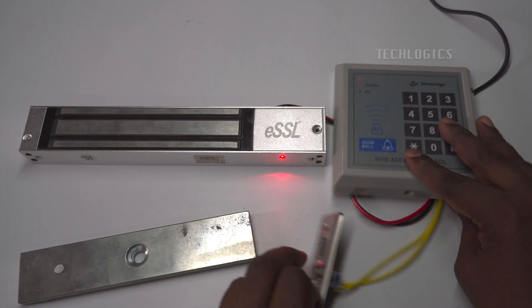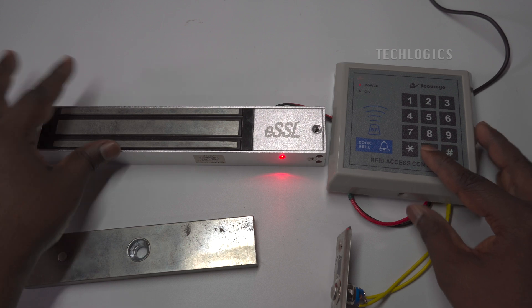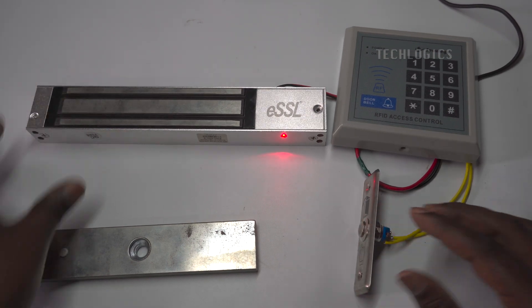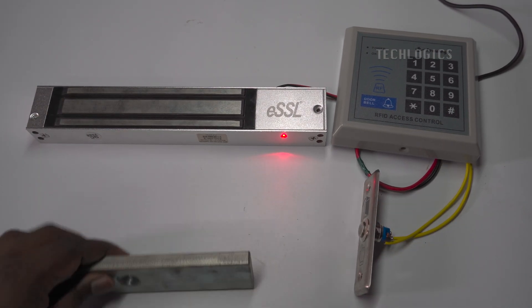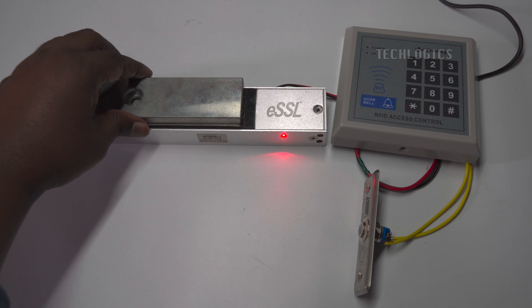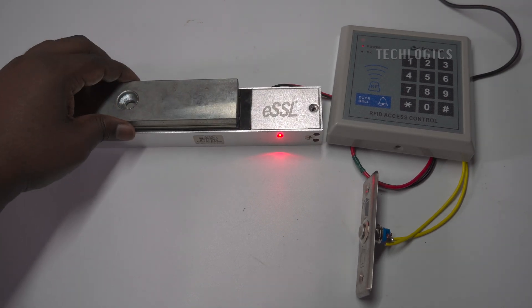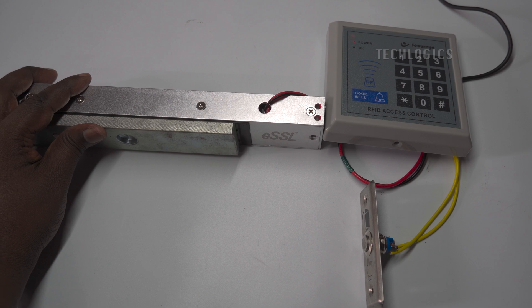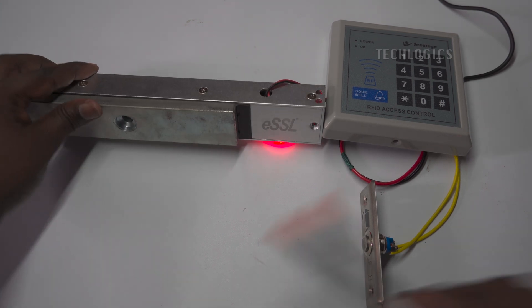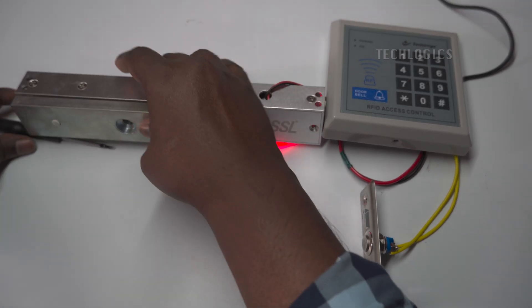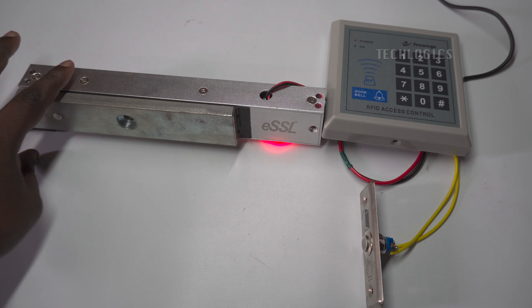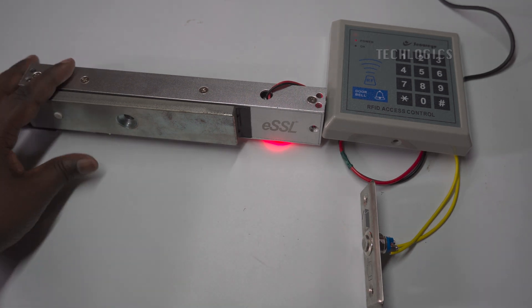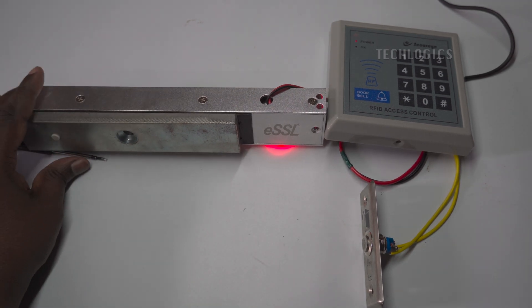Now that the lock's LED light indicates it is working, proceed by testing the system. First, press the exit switch to demagnetize the lock, which should release it and allow access. Next, present the RFID card to the access controller to verify that the system recognizes the card and operates correctly. These steps will help you confirm that the access control system is properly set up and functioning as expected.